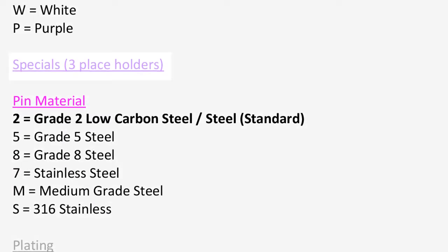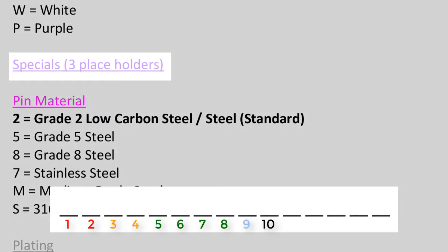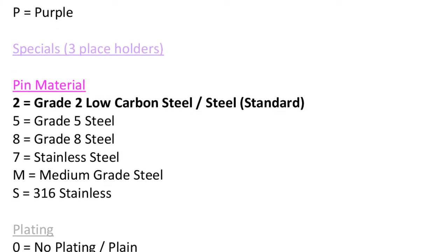Next, we move on to the purple section called specials. We reserve three spaces — 11, 12, and 13 — for this attribute. In cases where there is nothing special to note, enter three dashes here. In cases where there is something special to note, enter an X in any one of the spaces and dashes in the rest.